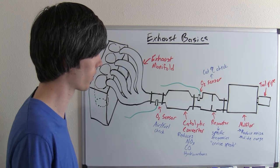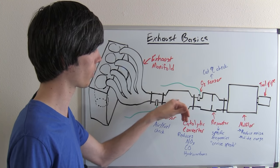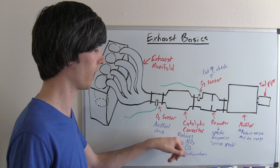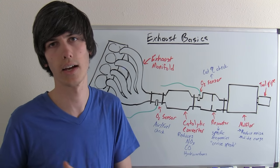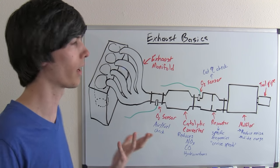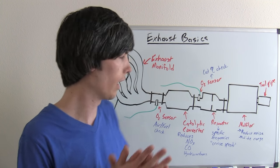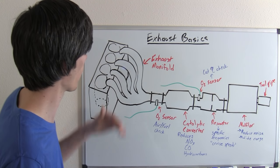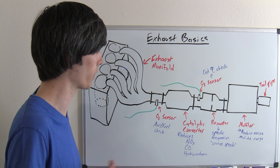Next up, we've got a catalytic converter. The point of this is to reduce harmful emissions. Things like nitrogen oxides, carbon monoxide, and the vaporized fuel, the hydrocarbons, that you haven't burned, assuming it's rich or something like that.